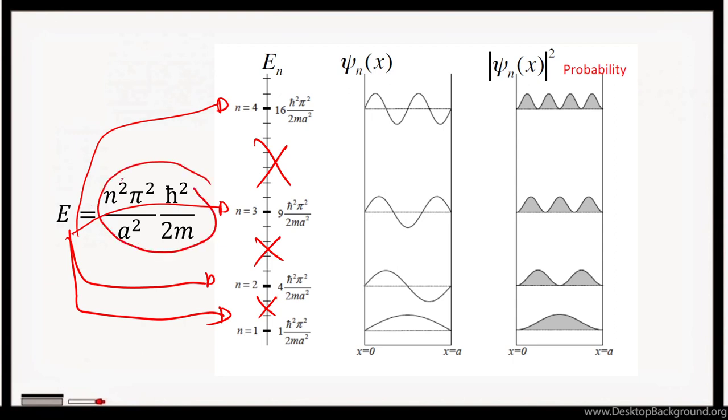And we can get the energy from this formula. So the allowable energy levels are the n² multiples of π²ℏ²/(a²·2m). Thank you, and hope to see you in the next video.